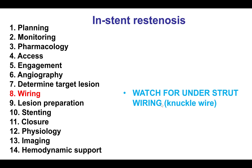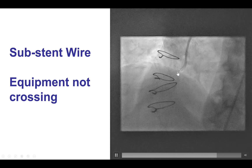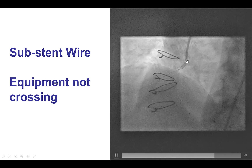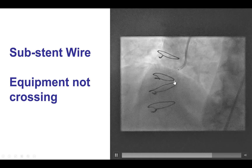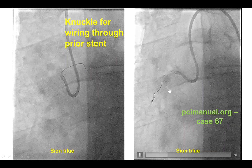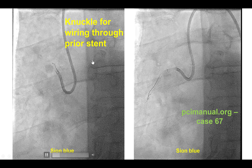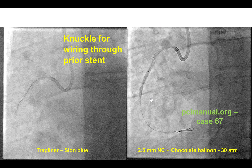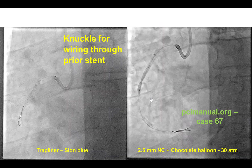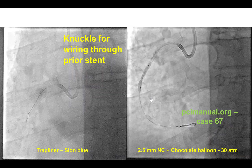Step number 8 is wiring — an important step. Every time the guide wire is advanced through a previously placed stent, there is the possibility of the wire going under a stent strut, which can hinder delivery of other equipment and lead to deformation of the stent. This is an example of a patient with previous stents where equipment could not be delivered, likely because the wire had gone under a stent strut. After rewiring using a knuckle wire, the equipment could be easily delivered. Using a knuckle wire can be very useful if the wire keeps going under the stent struts.